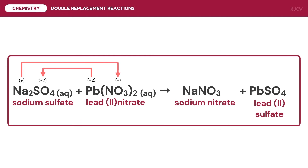Therefore, we write the symbol for aqueous as a subscript of sodium nitrate and the symbol for solid as a subscript of lead(II) sulfate. To balance the reaction, we have 2 as a coefficient of sodium nitrate. This means that 1 mole of aqueous sodium sulfate reacts with 1 mole of lead(II) nitrate to form 2 moles of aqueous sodium nitrate and 1 mole of solid lead(II) sulfate.